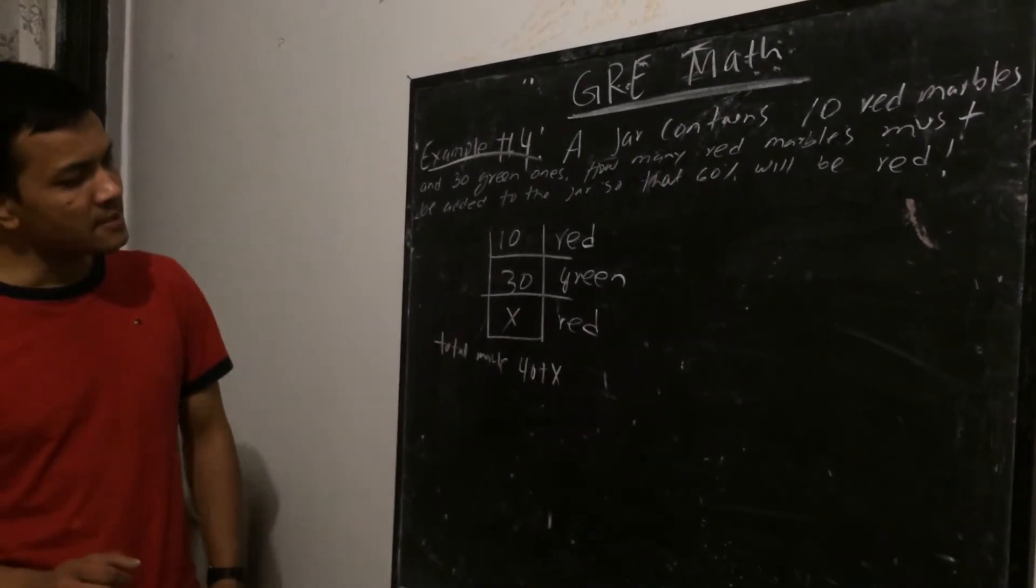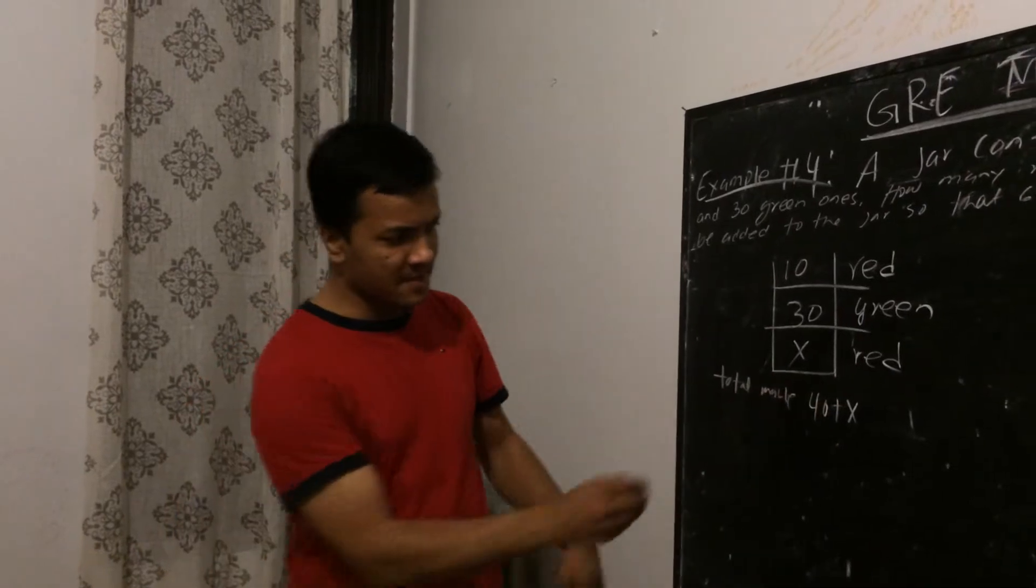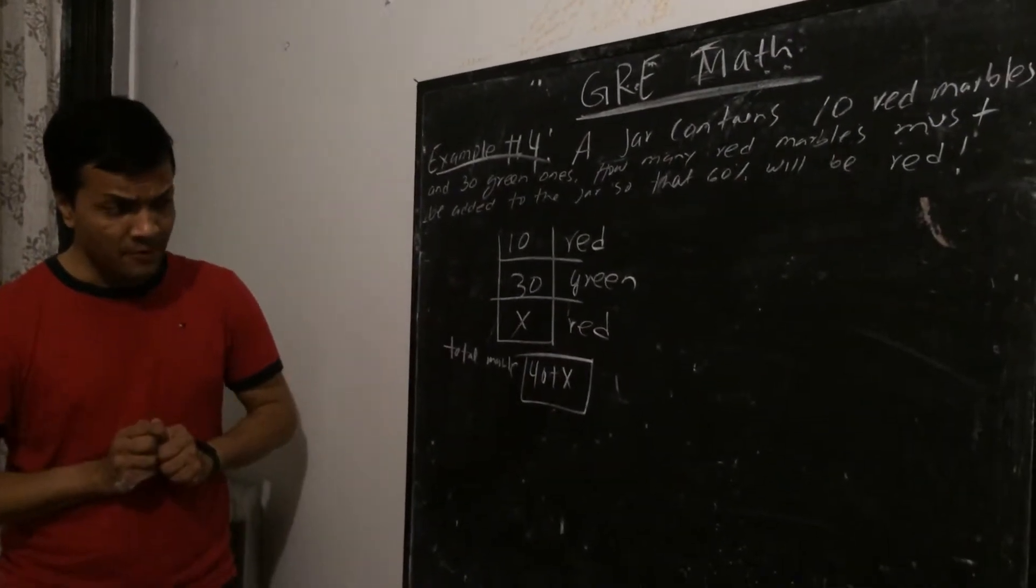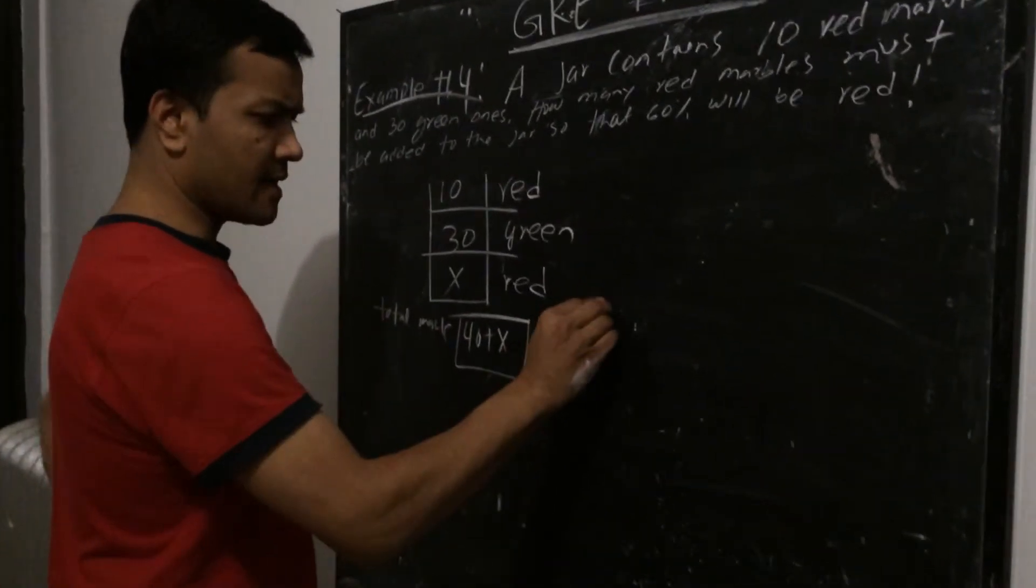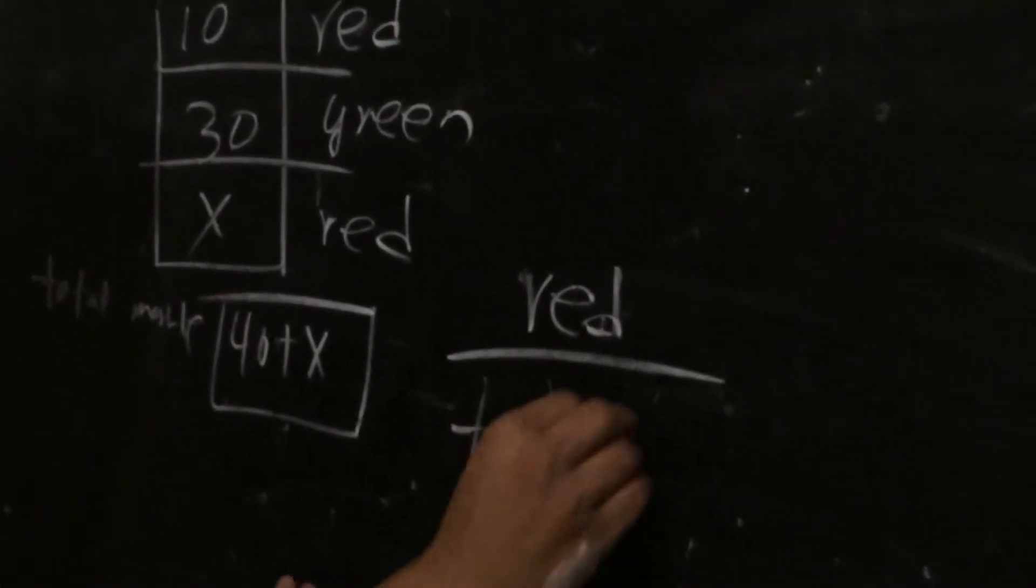Now we want to make sure that 60% of them are red, 60% of this guy is red. Okay, now we know that 10 plus x. Okay, so now red over total marbles.